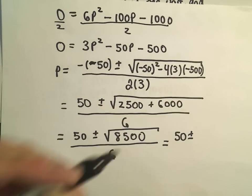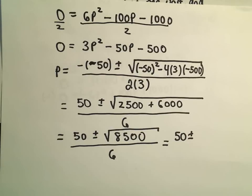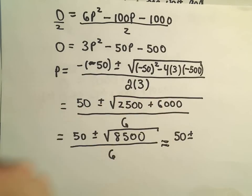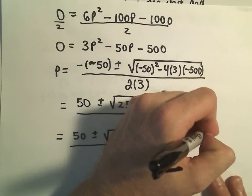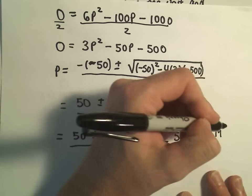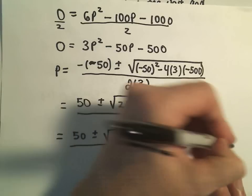But notice the square root of 8,500. The square root of 8,500, I'm going to start approximating here now. So the square root of 8,500, I'm getting that to be roughly equal to 92.195 all over 6.